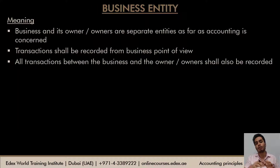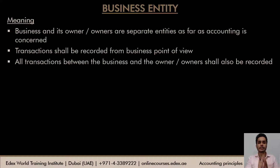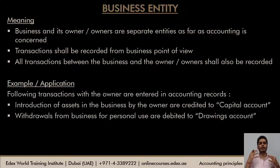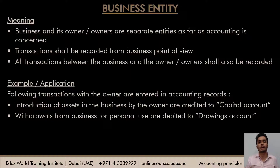The business entity principle states that the business and its owner or owners are separate entities. Whenever we're doing accounting for a business, we record all transactions from the point of view of the business, not the owner. So transactions between the business and the owner are also recorded — for example, a capital account when the owner introduces assets, and a drawings account when the owner withdraws money or assets for personal use.